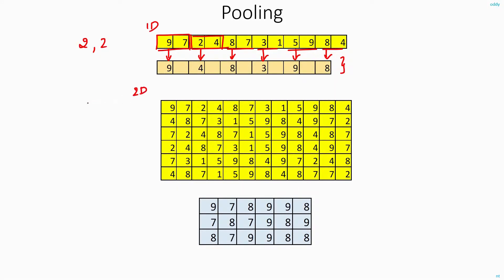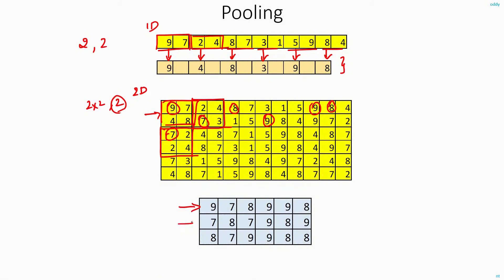For the 2D case, you take a 2x2 window with a stride of 2. You consider four values and find the maximum — in this case it's 9. You shift the window to the right by 2 pixels and again find the maximum, which is 7. So the first row of pooling gives values: 8, 9, 9, and 8. Once done with the first row, you shift the window down by 2 units. The maximum value in the next position will be 7, and you keep repeating for all rows in the image.